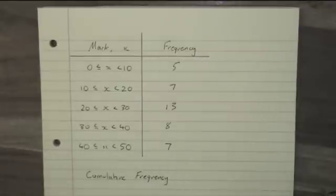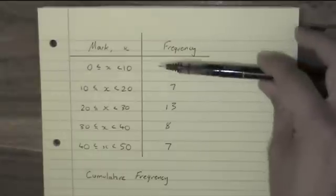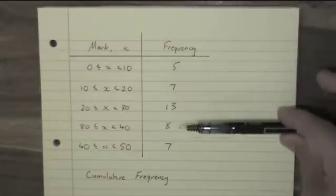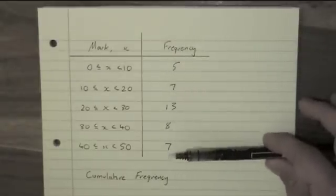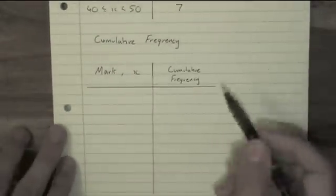Now cumulative frequency is when instead of having separate bands, separate classes in the table, they are accumulated together as you go through. So the first group is always the same.